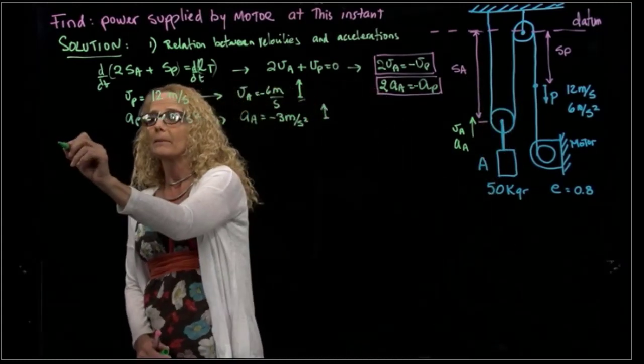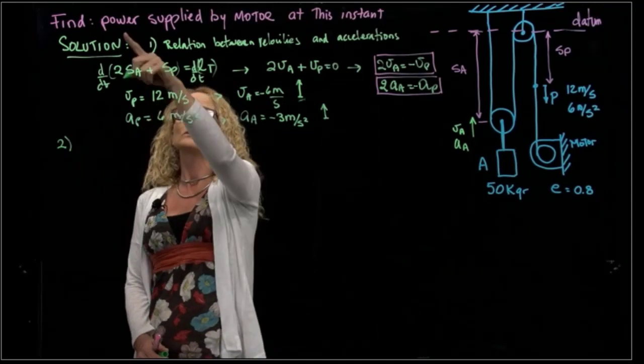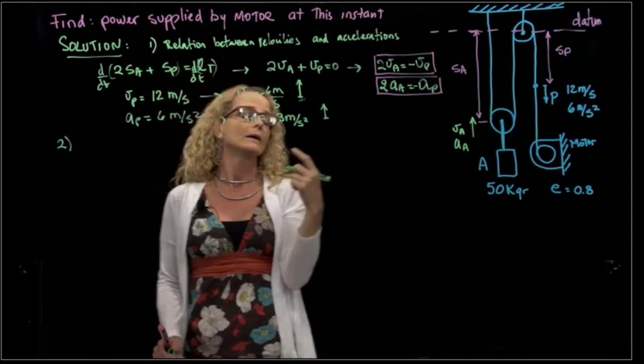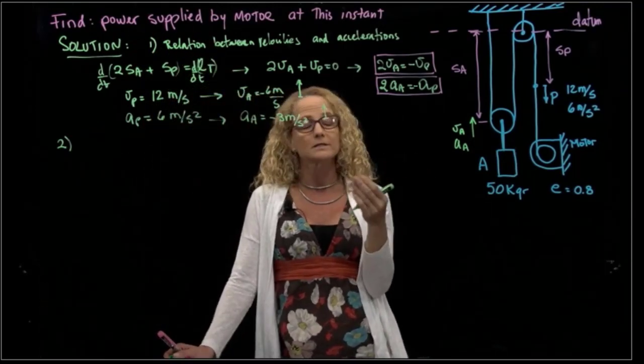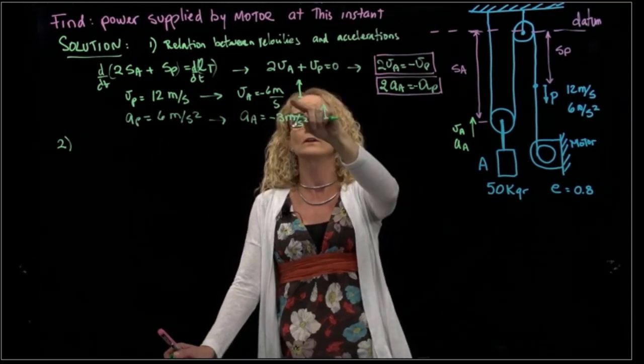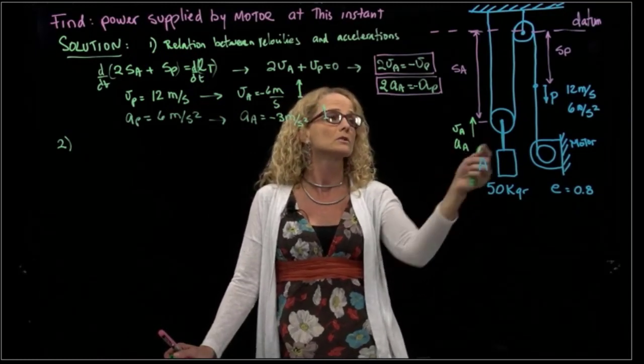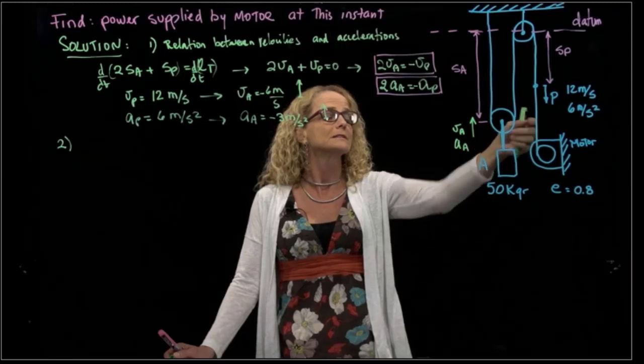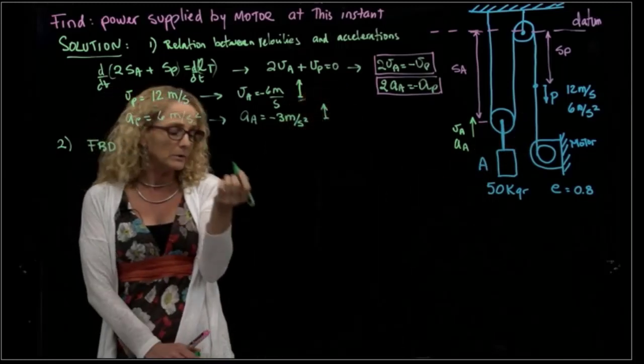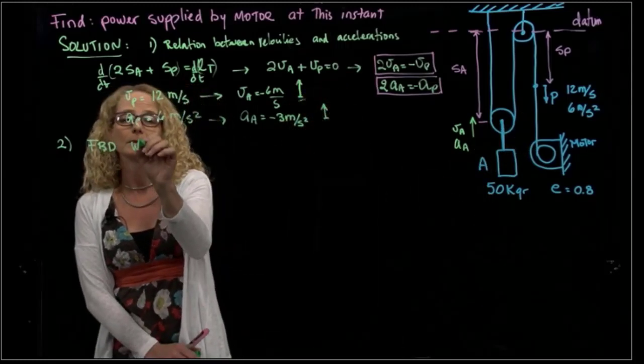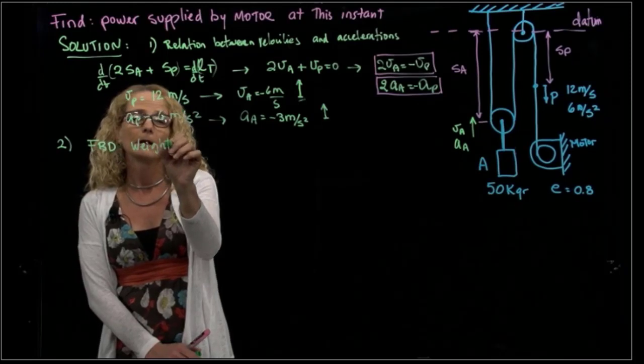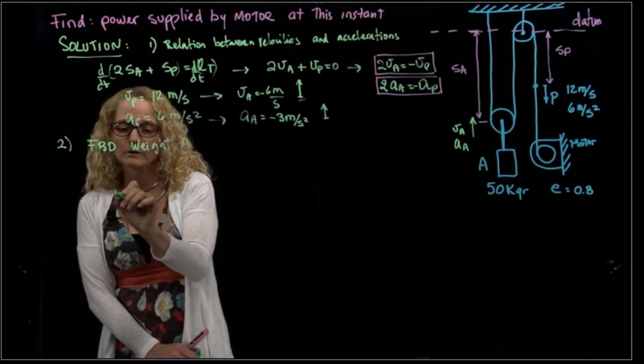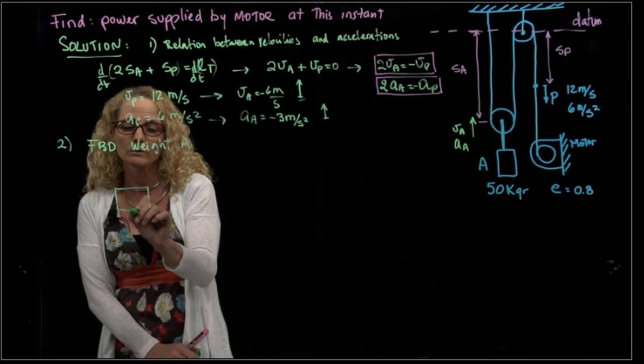My second step: if I want to find the power supply, I know that power is force times velocity, so I already have the velocity. I have to find the force. So I have to actually find the force of this cable. I will do the free body diagram of weight A. And if I do the free body diagram of weight A, what do I have?